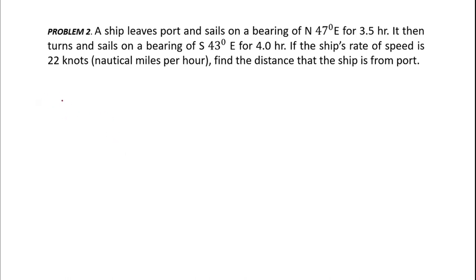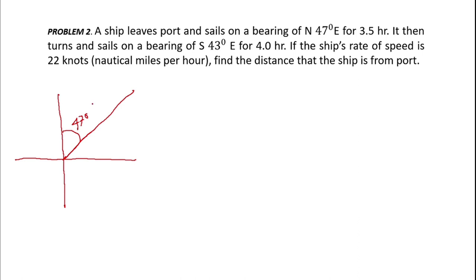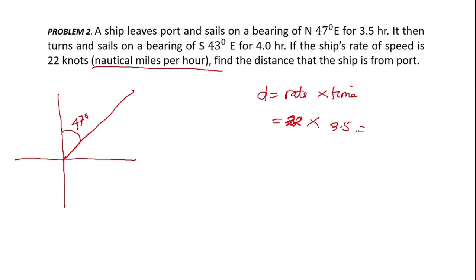The ship's rate of speed is 22 knots — nautical miles per hour. Find the distance the ship is from the port. First, we draw the diagram. The ship sails north 47 degrees east. Distance equals rate times time: D1 equals 22 nautical miles per hour times 3.5 hours, which equals 77 nautical miles.